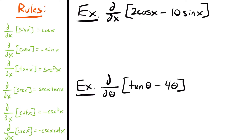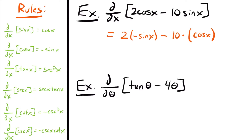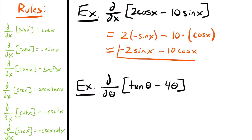So we have the derivative of 2cos(x) minus 10 times sin(x). The derivative of this is going to be equal to 2 times the derivative of cos(x), and the derivative of cos(x) is going to be negative sin(x). Then we're subtracting 10 times the derivative of sin(x), which is cos(x). So our derivative will be equal to negative 2sin(x) minus 10cos(x).